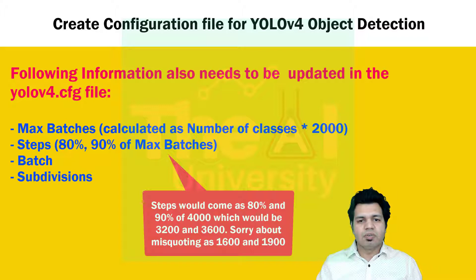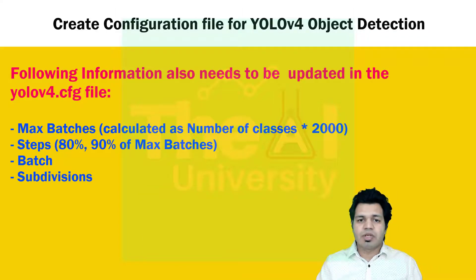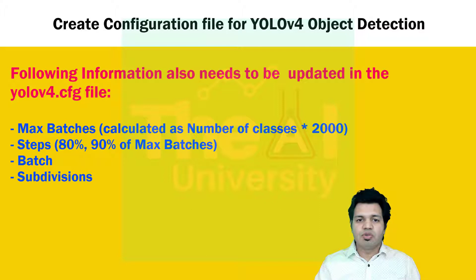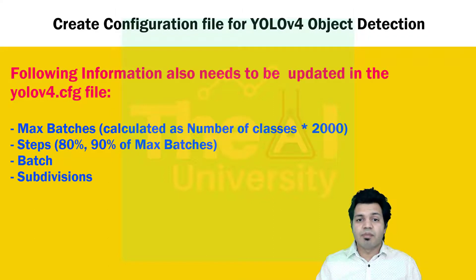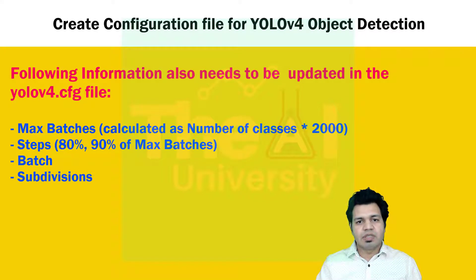The next parameters to update are batch number and number of subdivisions. Batch number tells us how many images will be processed in one batch during one iteration — model weights get updated after each iteration. The subdivision parameter represents the number of mini-batches in one batch, and tells us how many mini-batches the GPU will process in one go. Subdivision parameter values are set differently for training and test datasets — for testing we set both batch and subdivision values to 1. We will create two separate configuration files for training and testing.